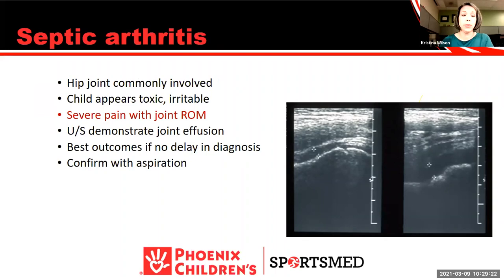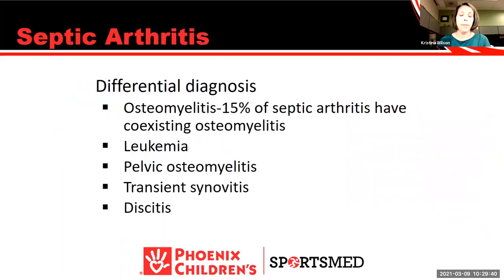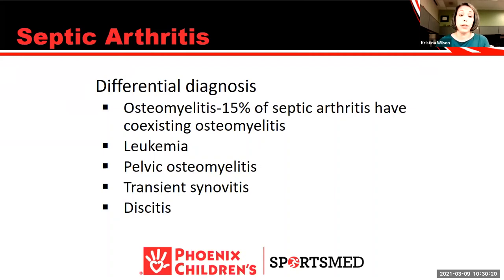The hip is most commonly involved in septic arthritis, but knees, shoulders, and other joints can be affected. Best outcomes depend on no delay in diagnosis. Confirmation is done with a joint aspiration — this can be done simultaneously with ultrasound when you see a large hip effusion. About 15% of septic arthritis cases coexist with osteomyelitis. Differential diagnosis also includes leukemia, pelvic osteomyelitis, transient synovitis, and discitis — don't forget the back as a cause of the limping child. Kocher's criteria for septic arthritis are: fever greater than 38°C, inability to bear weight, ESR greater than 40, and white blood cell count greater than 12,000.